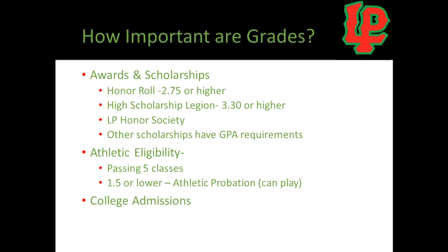Something new this year: grade level is determined by credits earned. To be classified as a sophomore, students must have earned at least four credits. For junior year, they need a minimum of 18 credits. To be considered a senior, they need a minimum of 32 credits. These numbers are based on what students need to earn each year to stay on track for graduation.